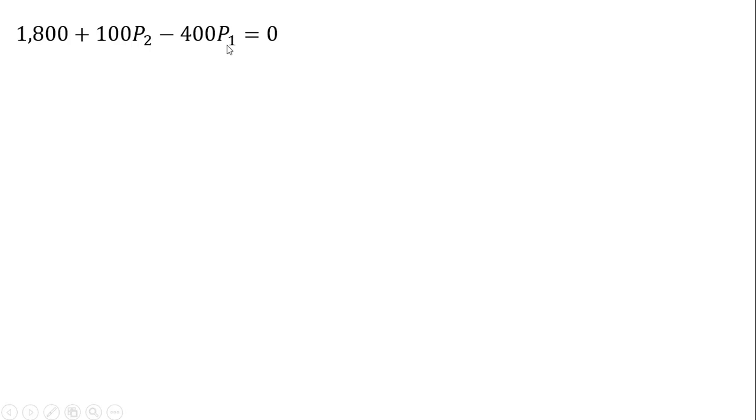Just rewriting that last step. We're going to solve for firm 1's price, so moving some things around. Dividing through by 400. We have firm 1's reaction function. Give me a price for firm 2 and I can give you firm 1's best response.